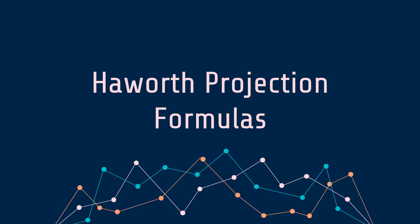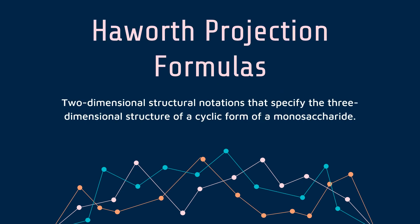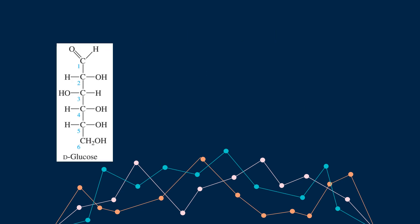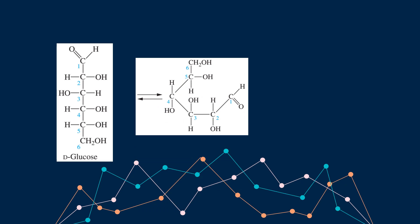Now let us take a look into Haworth projection formulas. Haworth projection formulas are two-dimensional structural notations that specify the three-dimensional structure of a cyclic form of a monosaccharide. Now how do we write Haworth projection formulas? Now here we have D-glucose. In reality, the open chain form of glucose as depicted by this Fischer projection is present in very small concentrations in the cells. It exists in cyclic forms under physiological conditions because the carbonyl group at carbon 1 of glucose reacts with the hydroxyl group at carbon number 5, forming a six-membered ring.